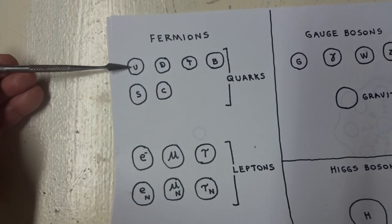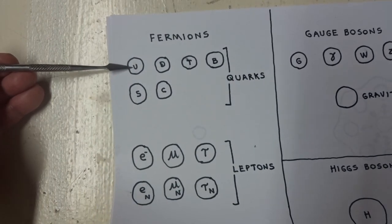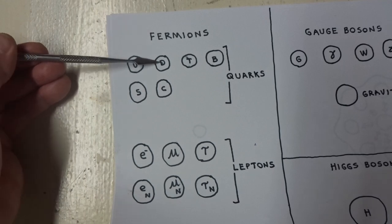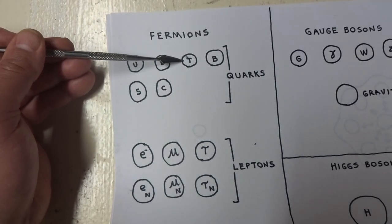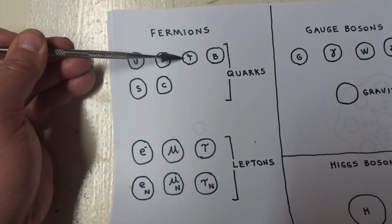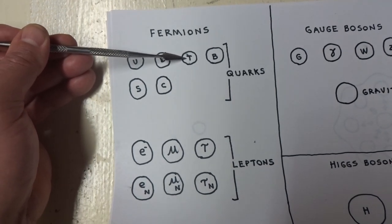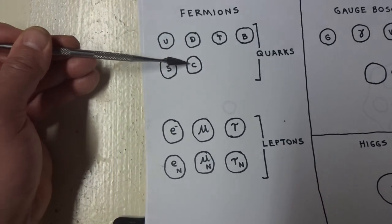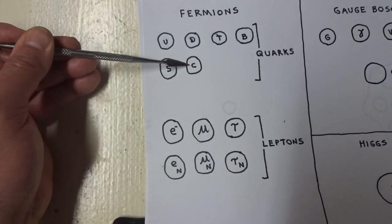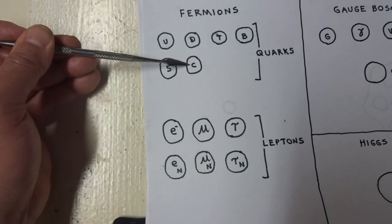The quarks, of which there are six, consists of the up quark, the down quark, the top quark, the bottom quark, the strange quark, and the charm quark. Those are the quarks.